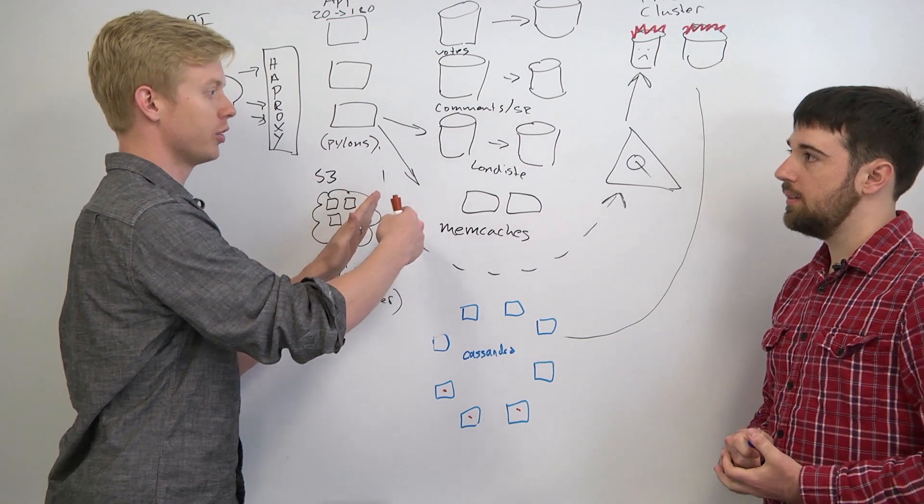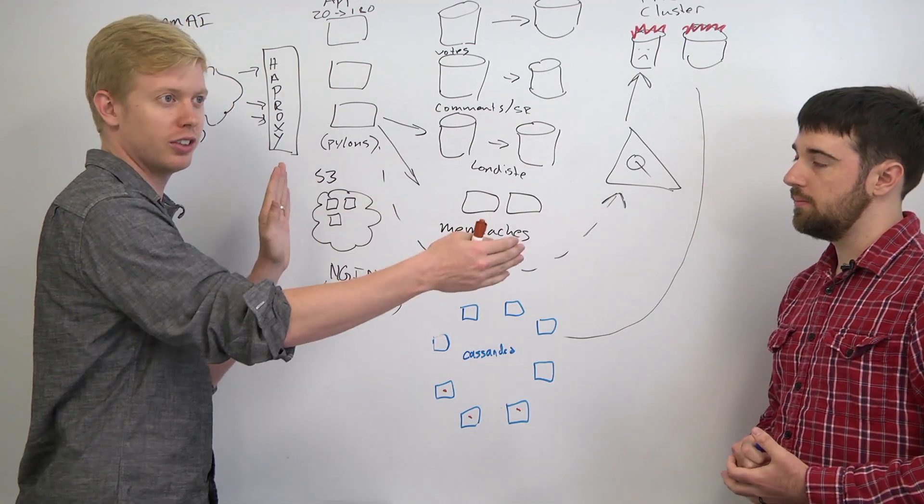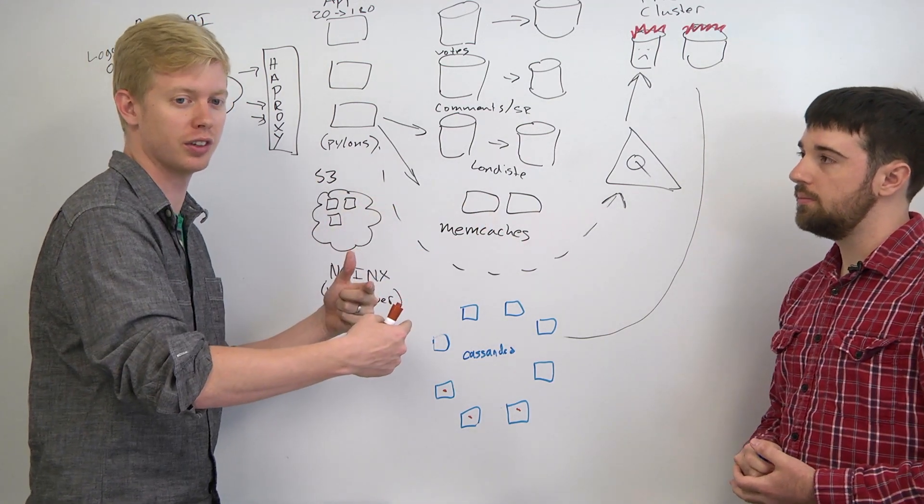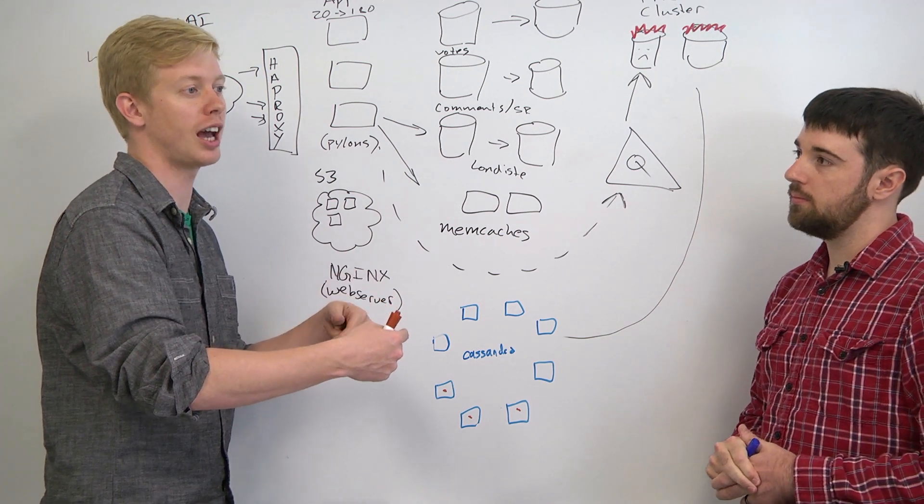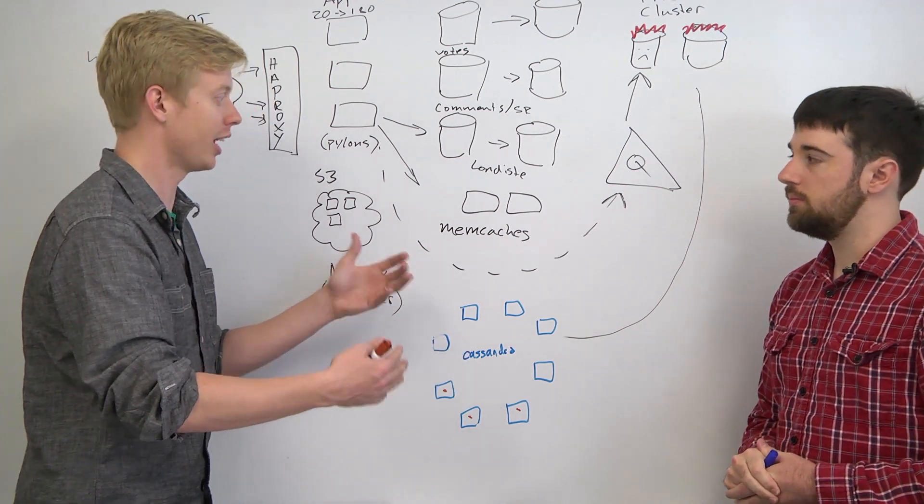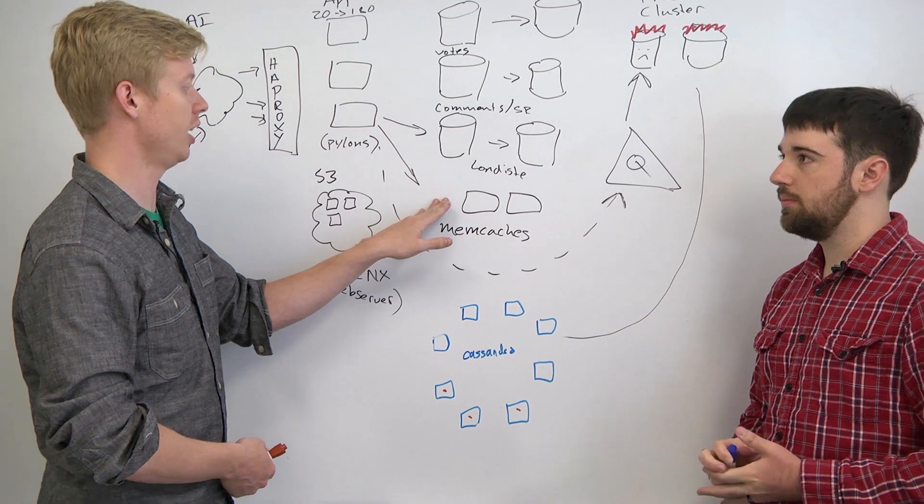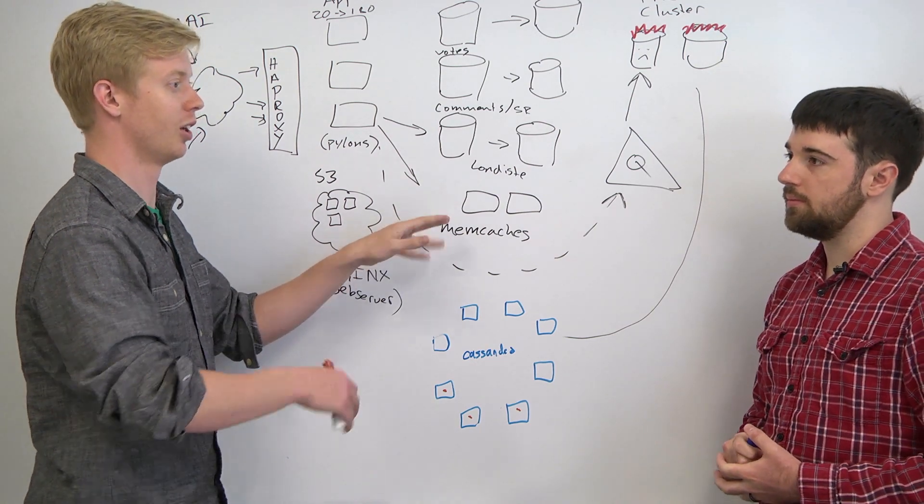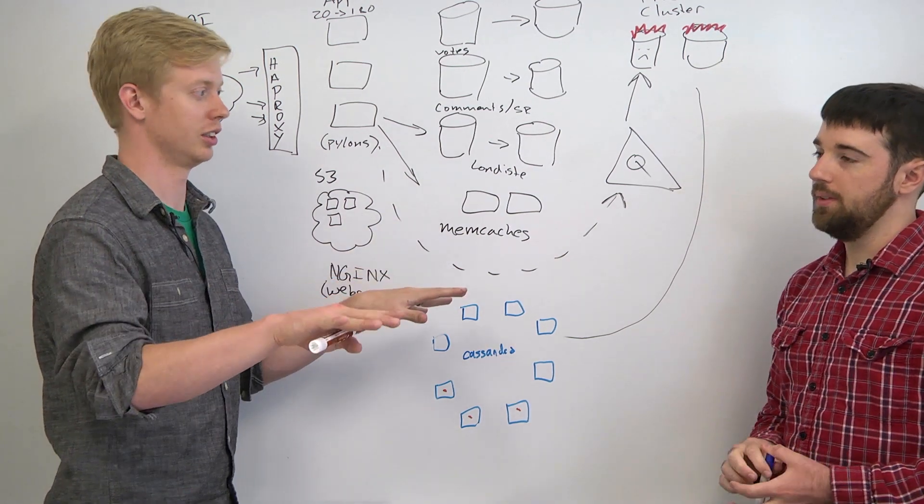So we'd replicate Memcached mostly for space, so things wouldn't expire out of the cache too fast. But that had the big downside that if we lost a single Memcached box, all of the keys would get rearranged.